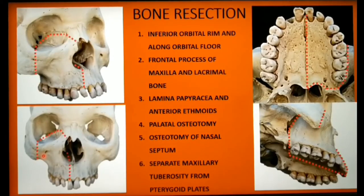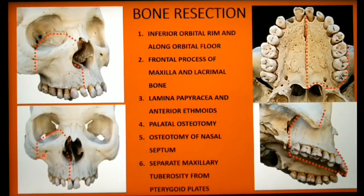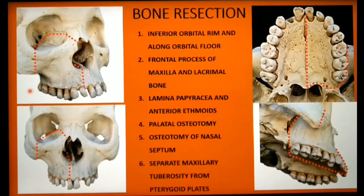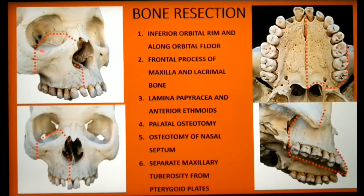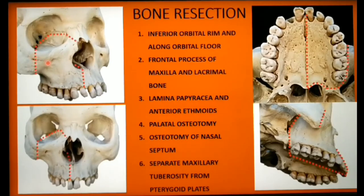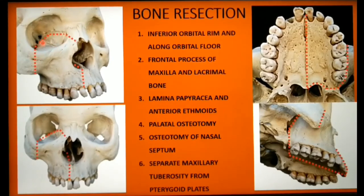For bone resection, the sequence of osteotomies is planned to reserve heavy bleeding towards the end of the procedure, though this may be adjusted depending on tumor location and extent. The first osteotomy is through the inferior orbital rim and along the orbital floor. A sharp osteotome is used to cut through the malar buttress and the inferior orbital rim, placed lateral to the maxillary sinus — confirmed by CT scan. The osteotome should not enter the maxillary sinus. Once through the buttress and rim, the osteotomy is directed into the floor of the orbit aiming for the infraorbital fissure.